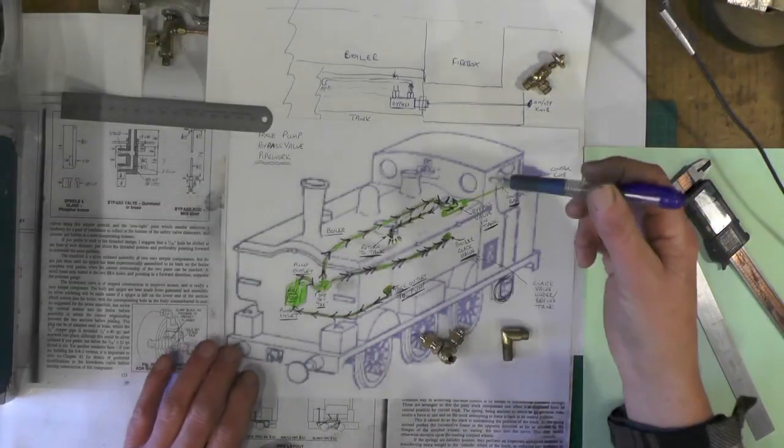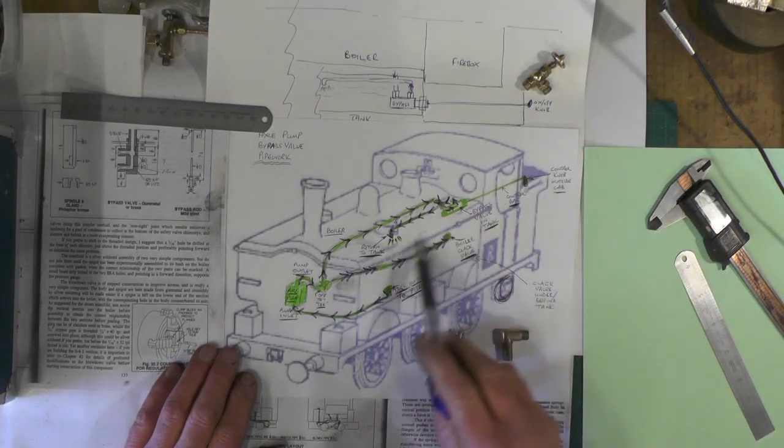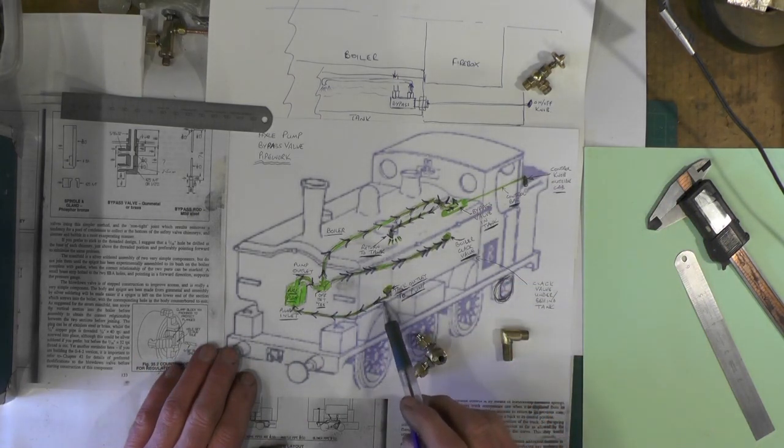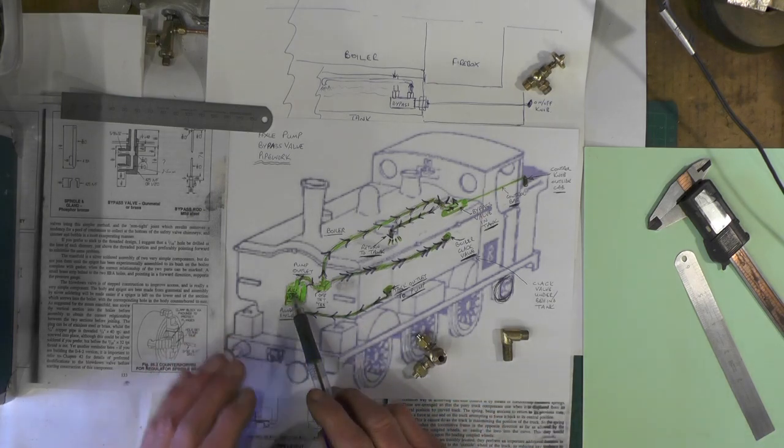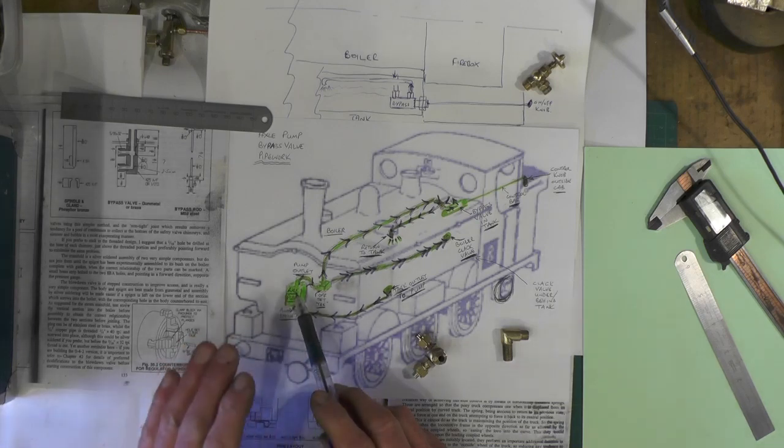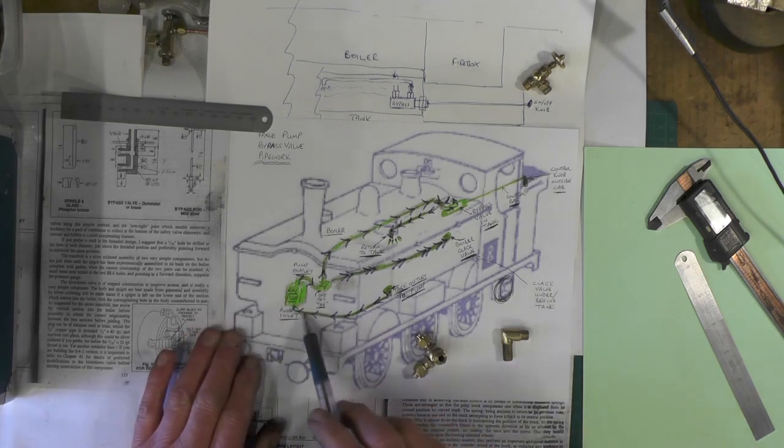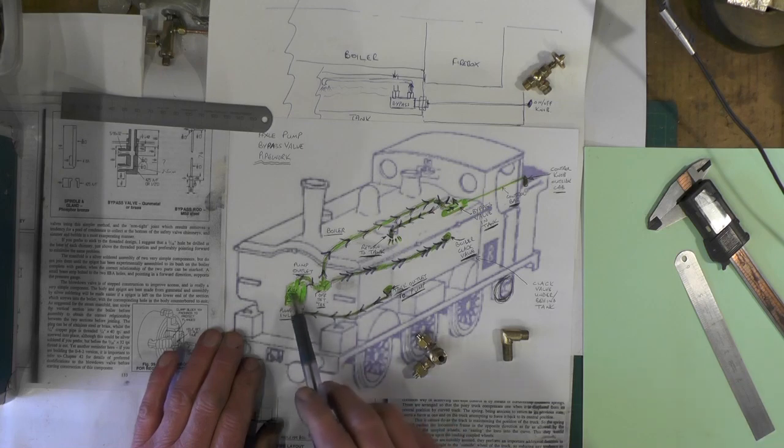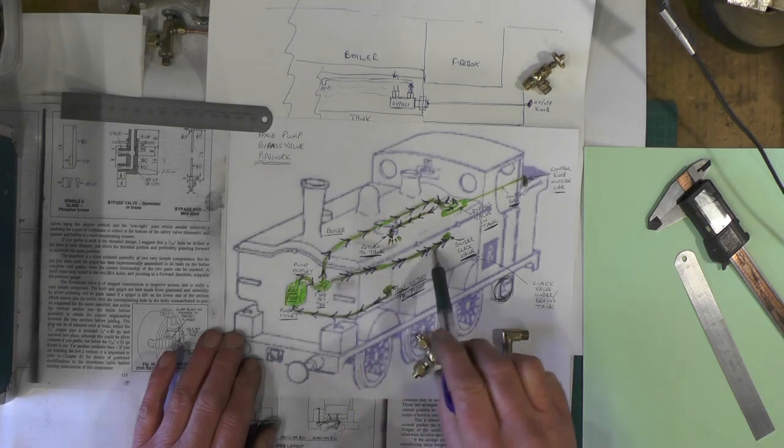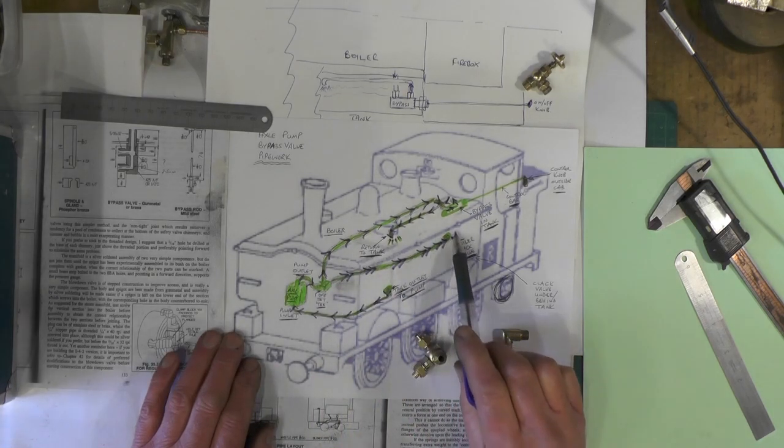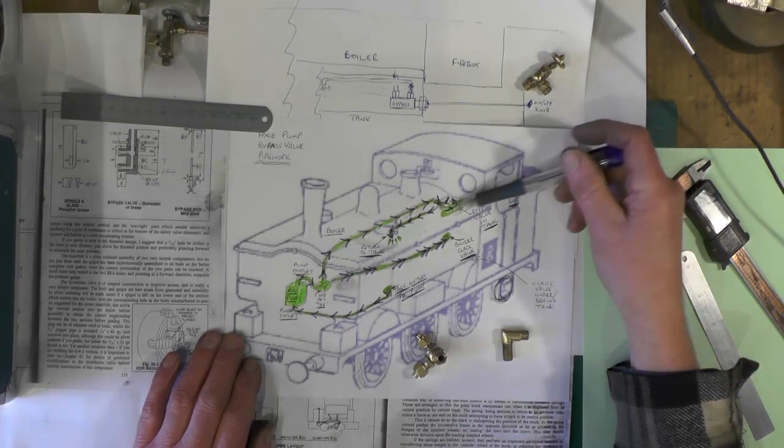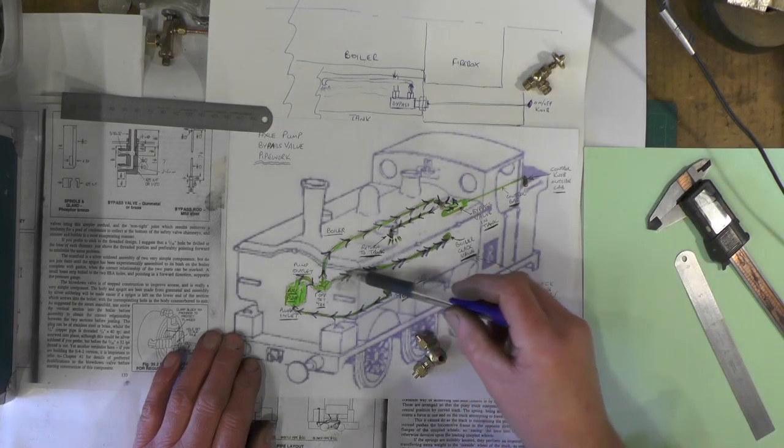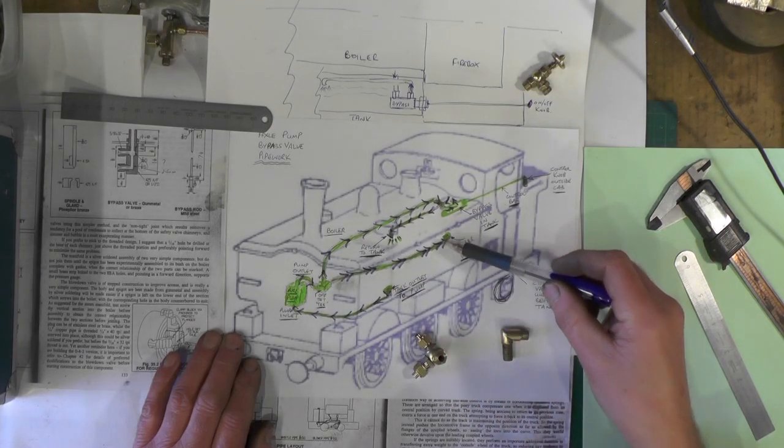So I'll just briefly explain then what happens here. You've got your water in your tank and it's continuously being fed from the bottom of the tank up to the pump. The pump is only pumping while the Loco is moving. So while it's pumping and while it's moving the water is going to come through the pump and it's going to feed the boiler clack valve to fill the boiler up. So that's with the bypass valve in the closed position.